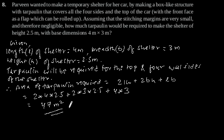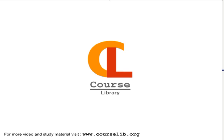So 47 square meters of tarpaulin will be required to make the shelter of height 2.5 meters with base dimensions 4 meters by 3 meters.